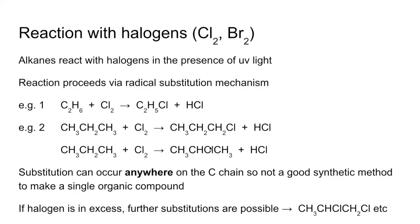These are monosubstitution products, 1-chloro and 2-chloropropane. But the example at the bottom of the screen there, that's a di-substituted product. I've made 1,2-dichloropropane there. Ultimately, if there was enough halogen in excess, all of the hydrogens would be substituted with chlorines in this case. Not a great method for producing a single organic compound.